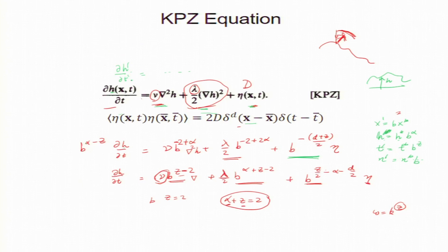So, this t prime is there. So, t prime is t times b to the power z. So, this will replace by t prime is b to the power z. So, the b to the power z goes up. So, this is one term.